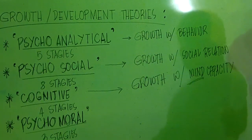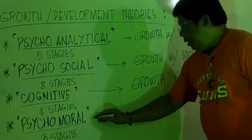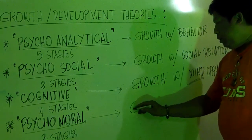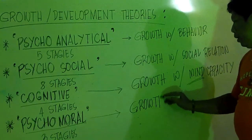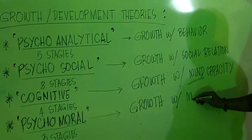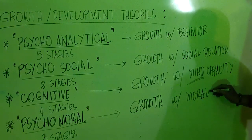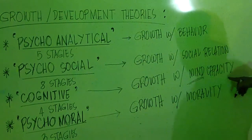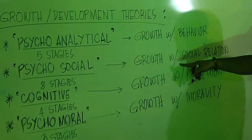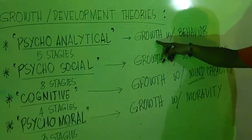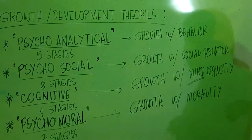The last major growth and development theory is what we call psychomoral. Psychomoral is all about the growth and development of a child with his values or morality. So this is all about growth with morality — the growth and development of a child based on morality.